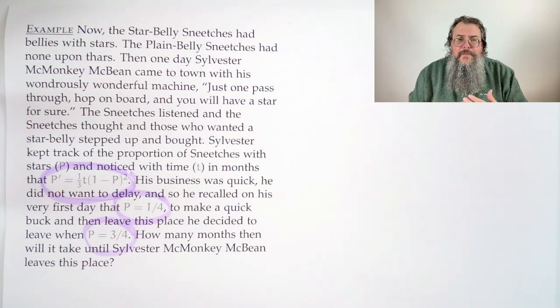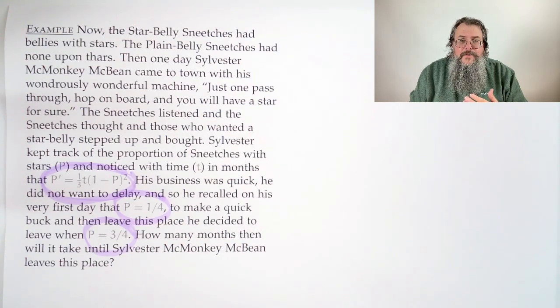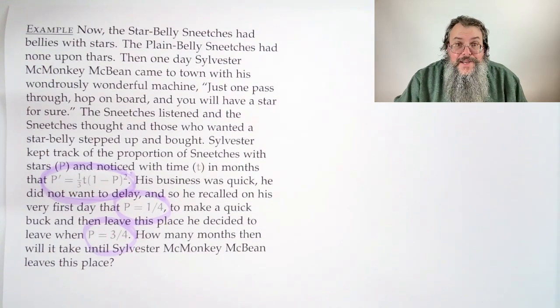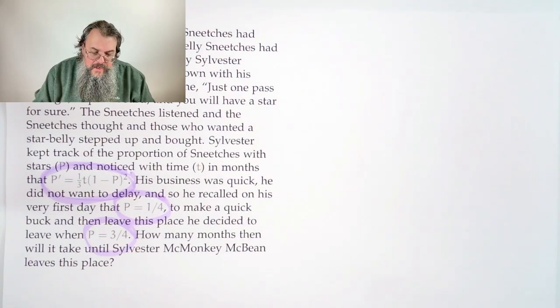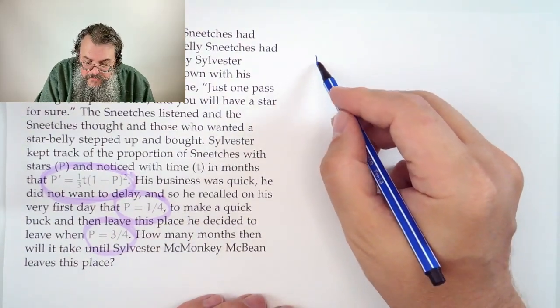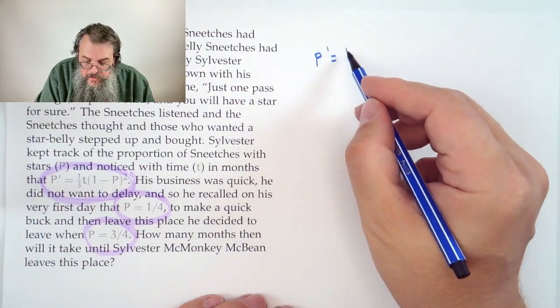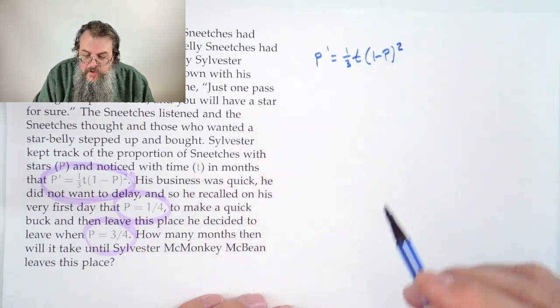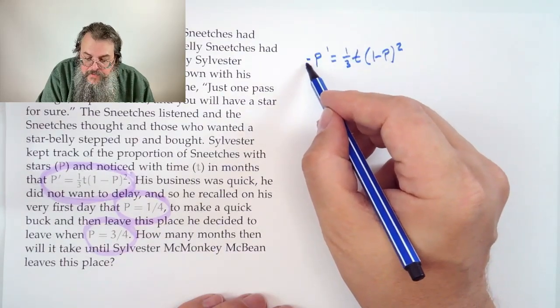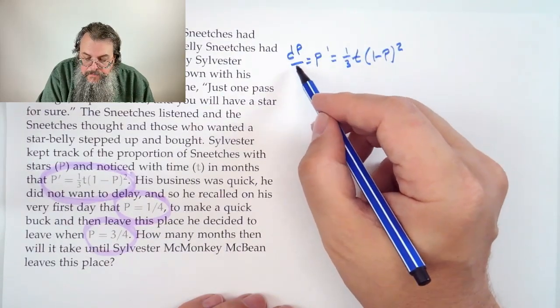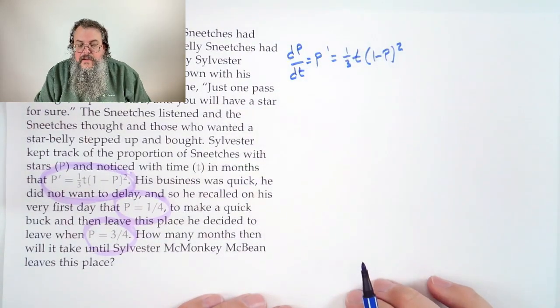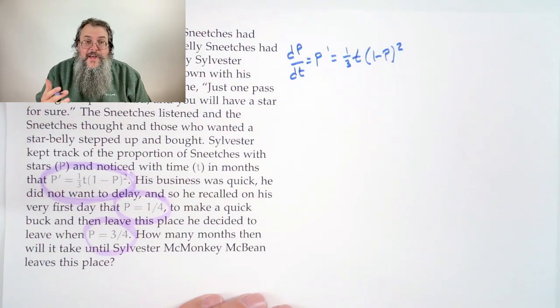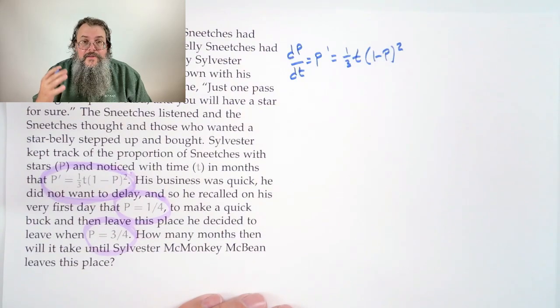Really, while there's all this fun language here, you can strip most of it away and say we're given a differential equation with an initial condition, and we're asked when does our function attain a certain value. That doesn't seem so bad. Looking at our differential equation, we have P' is 1/3 T times (1 minus P) squared. Of course, P' is just another way of saying dP/dT, and no surprise, given that it's from today, this is separable.